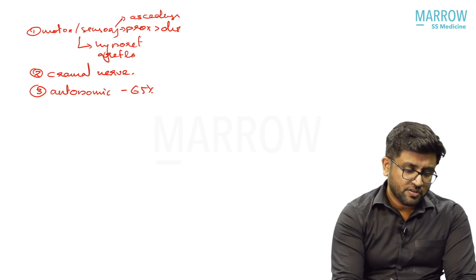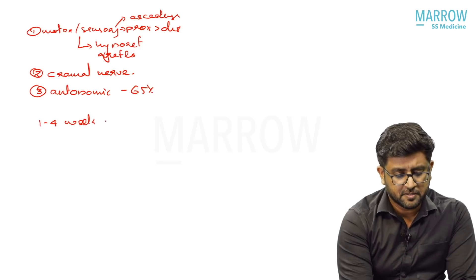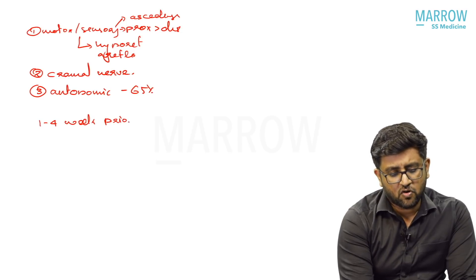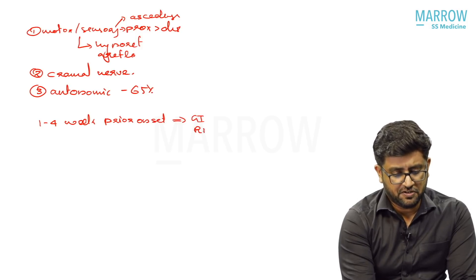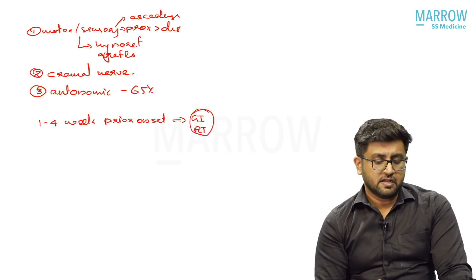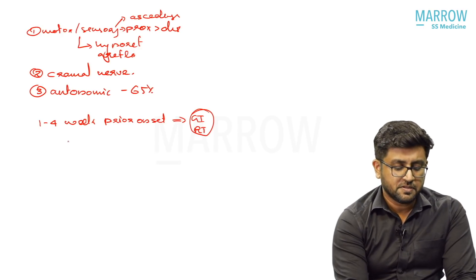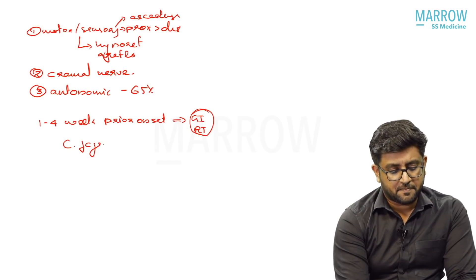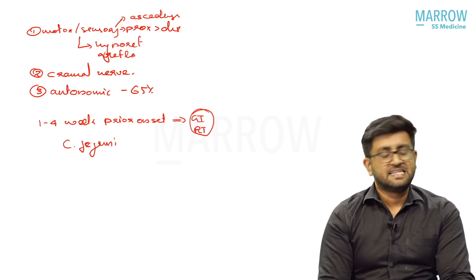One more thing important about GBS is usually there will be a trigger. Trigger usually happens 1 to 4 weeks prior to the onset of disease. Usually the most common is GI infection or respiratory tract infection. Respiratory tract or GI infection has the most common association with GBS.